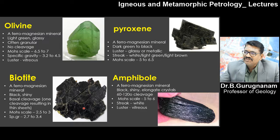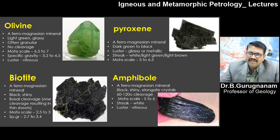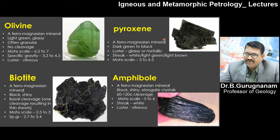Olivine is a ferromagnesian mineral. It is light green and glassy in nature, often granular in structure. It does not have any cleavage. On the Mohs scale, the hardness of olivine is 6.5 to 7, the specific gravity is 3.4 to 4.5, and the luster is vitreous.